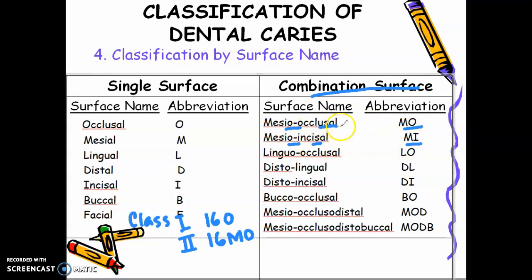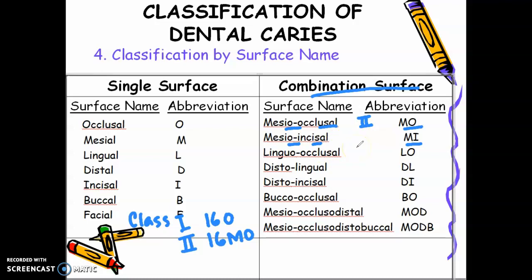When you have mesio-occlusal, or when there is an occlusal surface involved, you think: is that anterior or posterior? So if mesio-occlusal, that is posterior because it has an occlusal surface — this is class 2. If mesio-incisal, there is an incisal edge, so that is an anterior tooth with a proximal surface — that will be class 4.